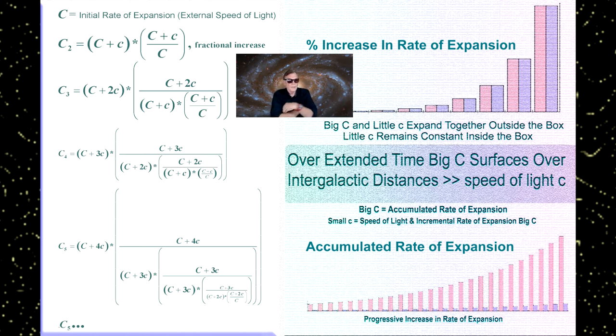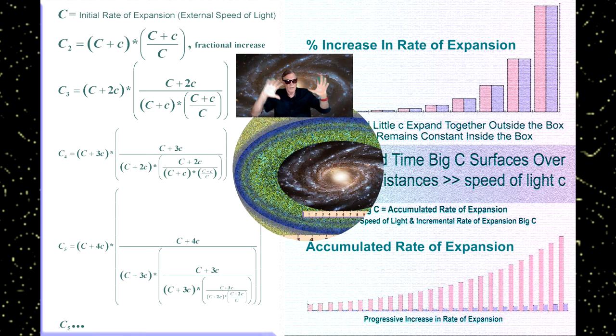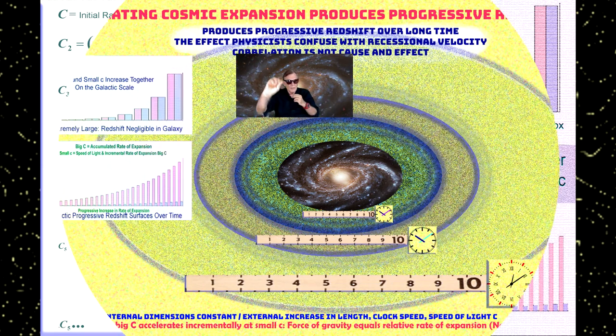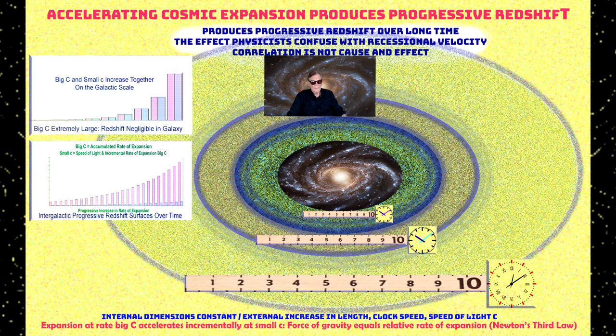So while it is obvious that the accelerating cosmic internal-to-external outside space-time expansion of the universe as a whole will eventually result in this accumulated progressive component of redshift.